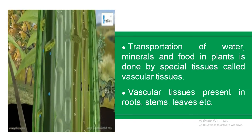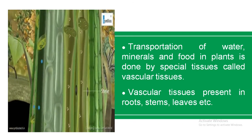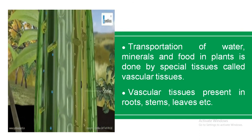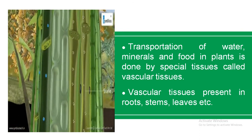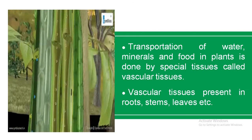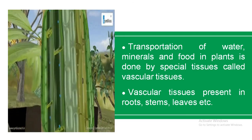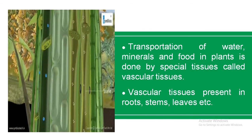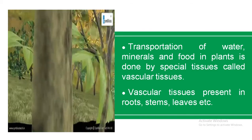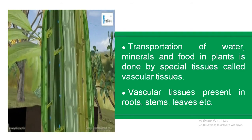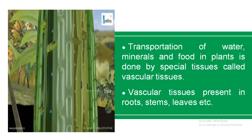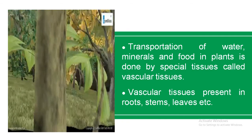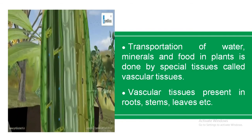In human beings and animals, specific organs perform the circulatory system and excretory system — transporting important substances and removing toxic substances. But in plants, vascular tissues perform the transportation of important substances and the removal of waste through excretion.